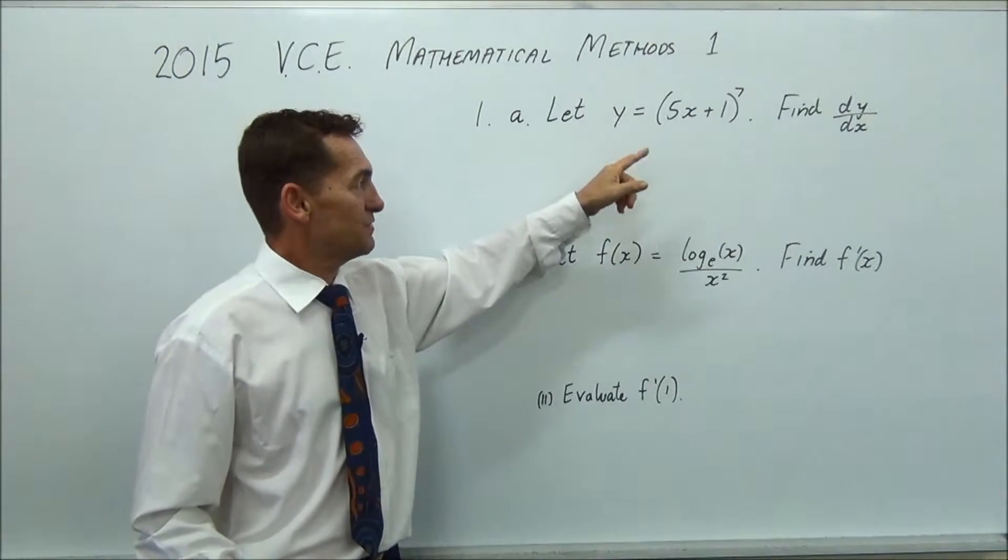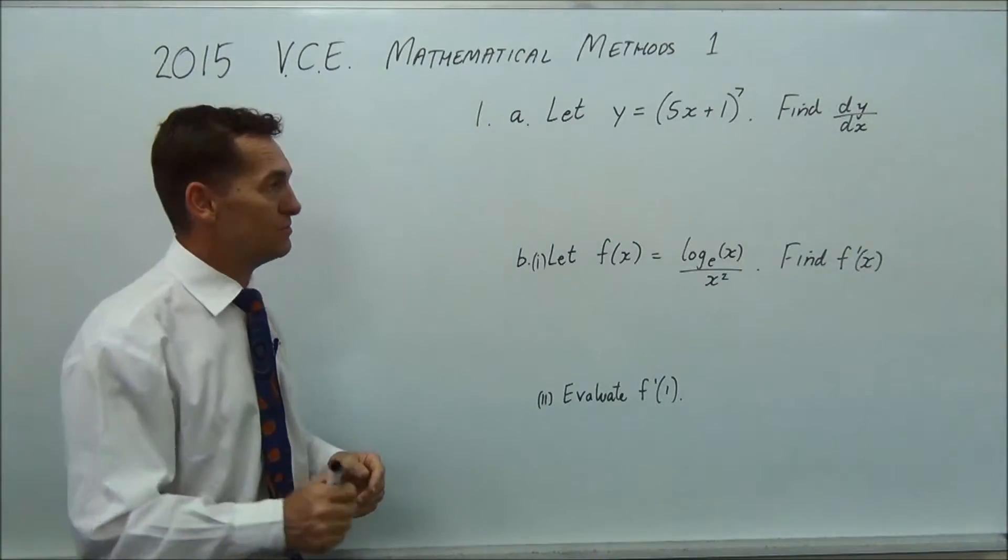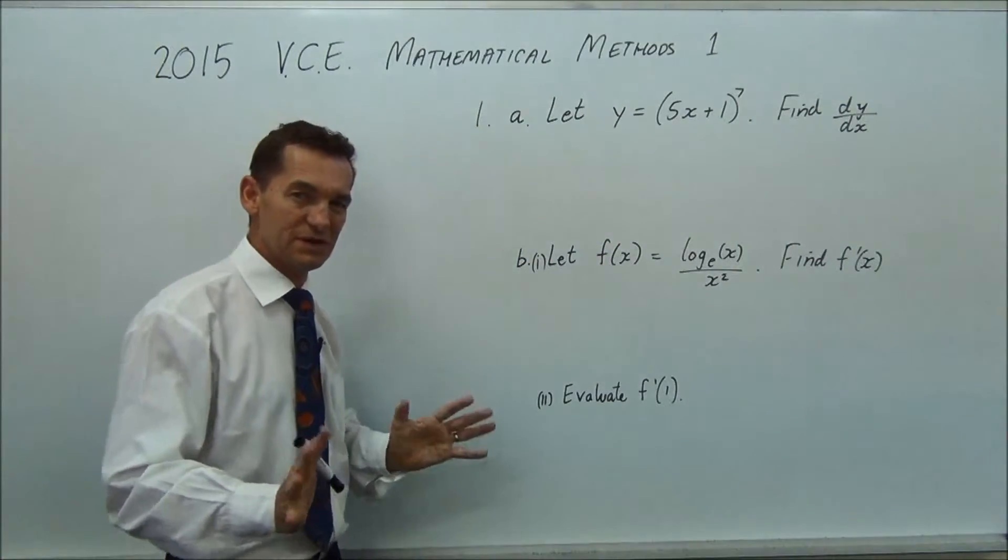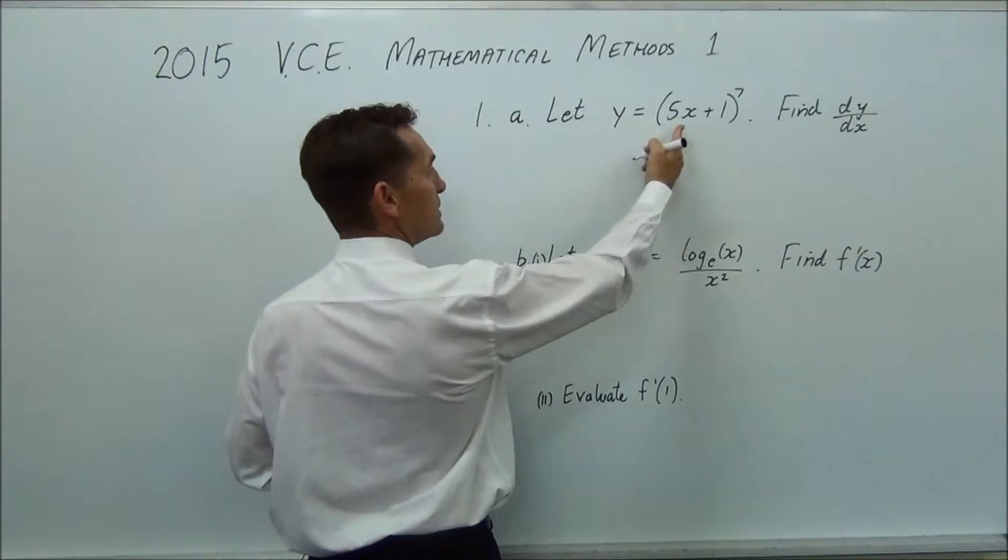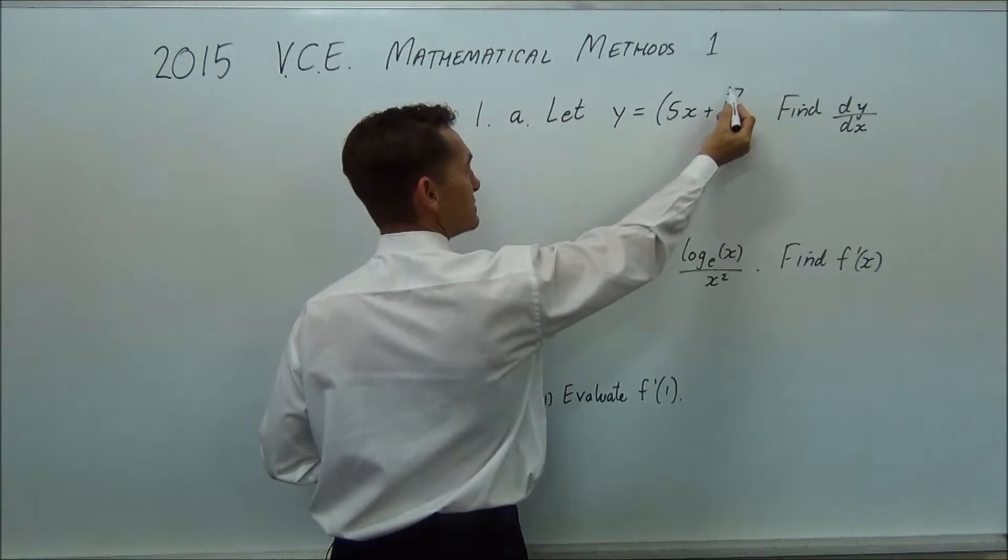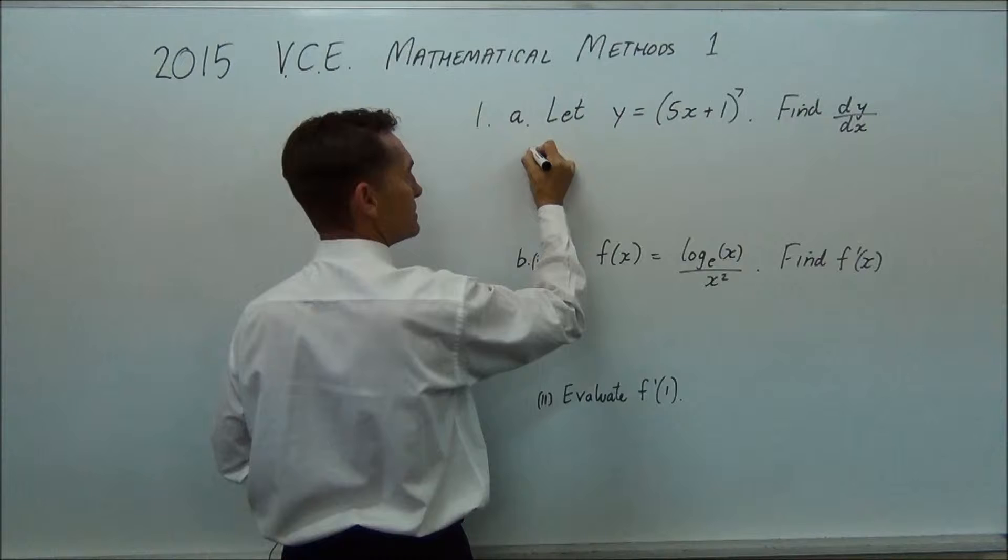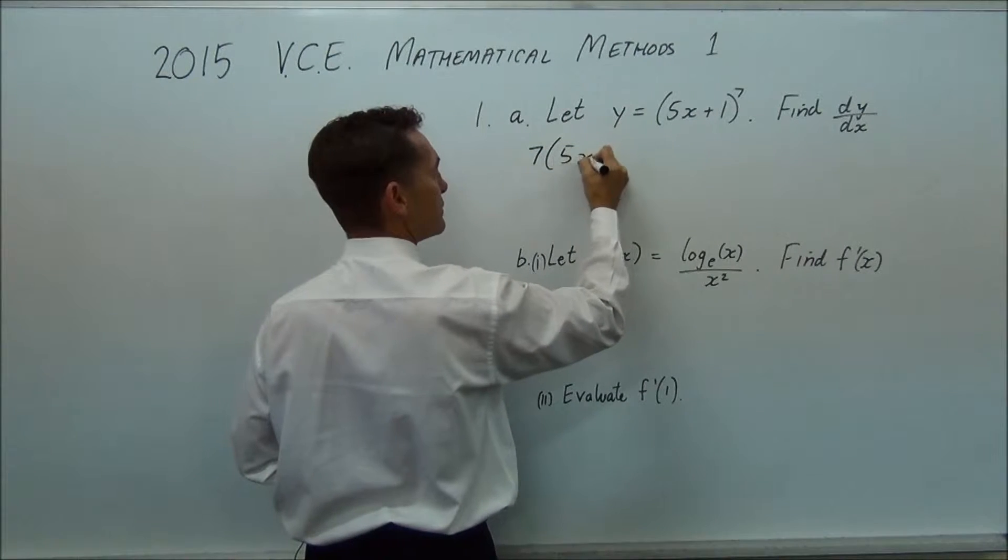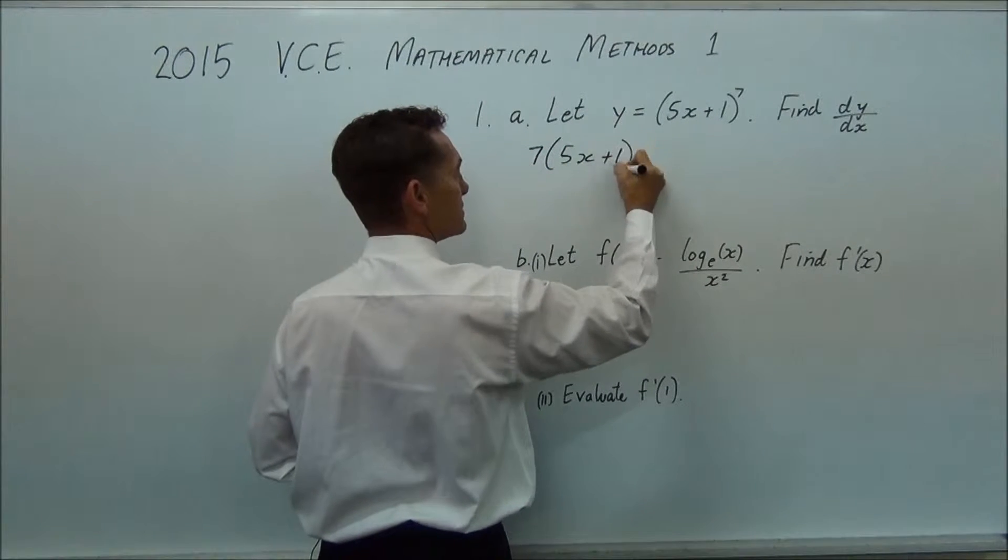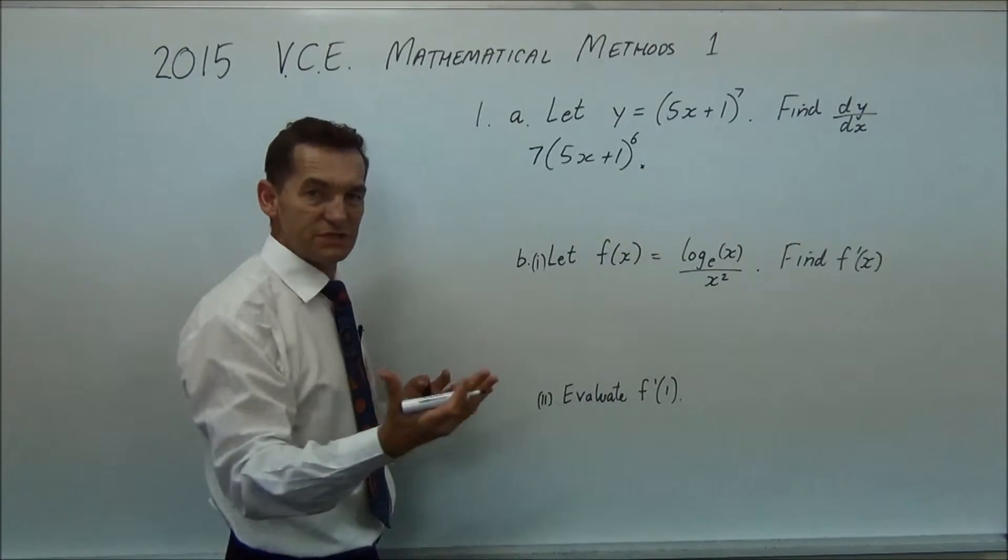Let y equals 5x plus 1 all to the power of 7. So for this you're going to use the composite or chain rule, whichever name you use, it's the same thing. So we're going to differentiate the outside, so if you differentiate the outside, the 7 will come in front and this will go down by 1.